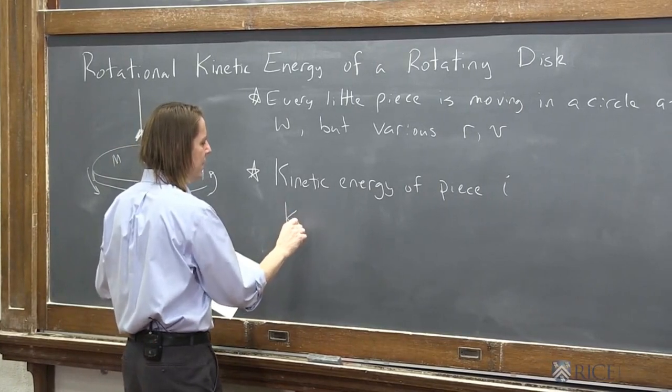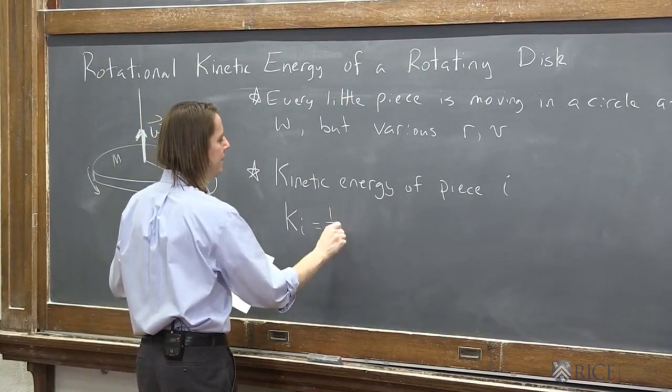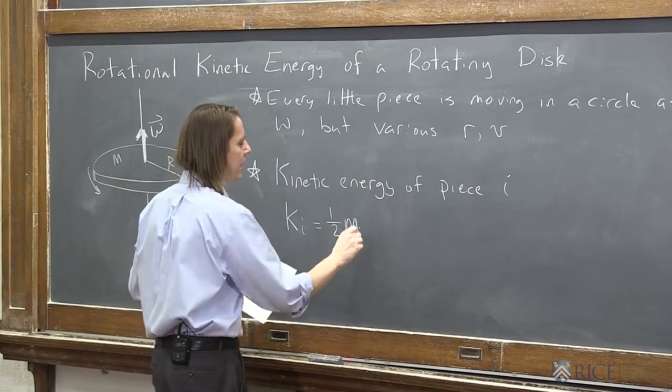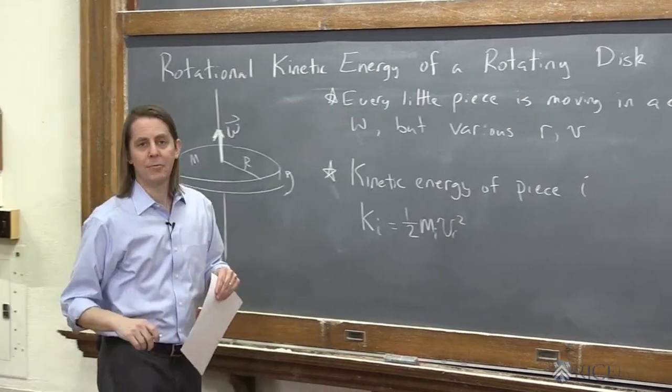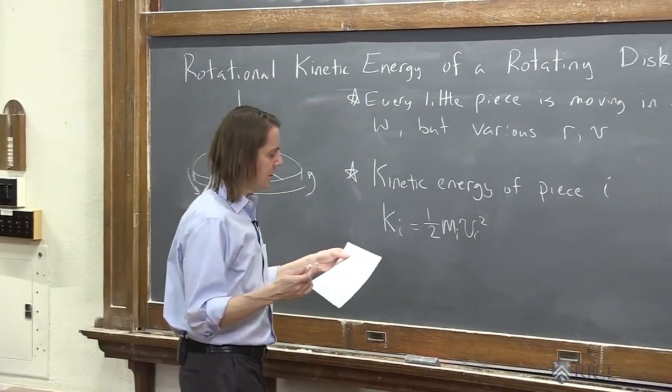So the kinetic energy for piece i, it's 1/2 the mass of piece i times the speed of piece i squared. That's just straight from translational kinematics that we've already talked about.